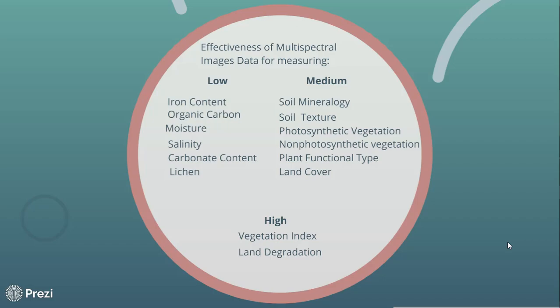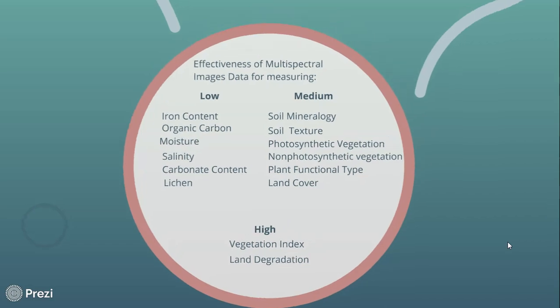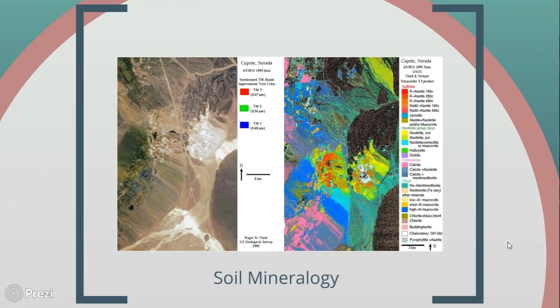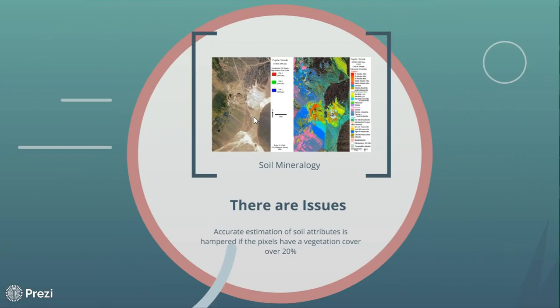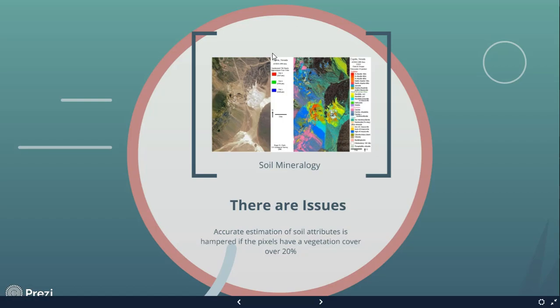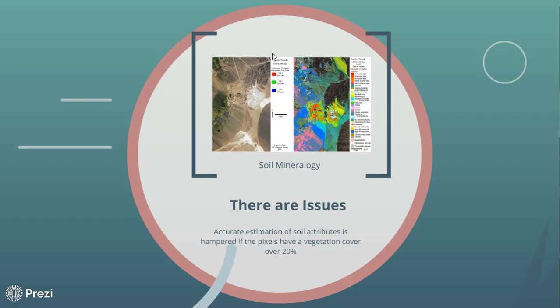There are several satellites out there that have active data that you can use to look at this stuff and extrapolate on a 30-meter scale. This is just a really cool picture of soil mineralogy, and as you can see, there are some issues that crop up when vegetation starts becoming part of the picture. Accurate estimation of soil attributes really gets hampered if the images have a vegetation cover of only 20 percent.